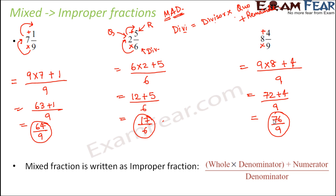So we can say that the mixed fraction is written as an improper fraction in the following way: whole × denominator + numerator, divided by the denominator. This is another way of writing the same thing — divisor × quotient + remainder, divided by divisor. So divisor is the denominator, quotient is the whole number part, and numerator is the remainder. That is how we convert a mixed fraction into an improper fraction.